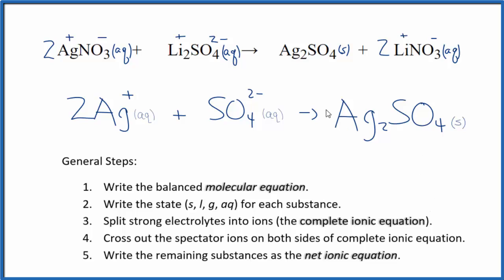So this is the net ionic equation for silver nitrate plus lithium sulfate. You note that charge is conserved. We have two times one plus, that's two plus. Two plus and the two minus. Net charge of zero. This is a neutral compound. Net charge of zero. Charge is conserved.